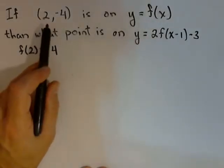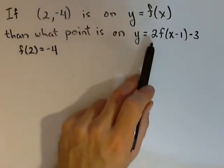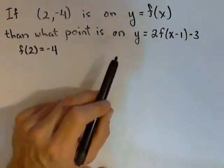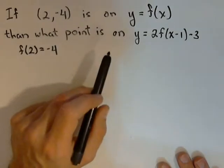What we want to do is find out what is the corresponding point that's on y equals 2 times f of x minus 1 minus 3. So we want to look at what transformations we have going on to figure out what the new point will be.